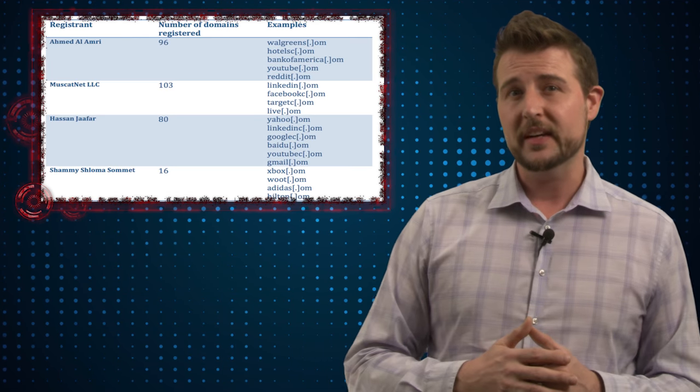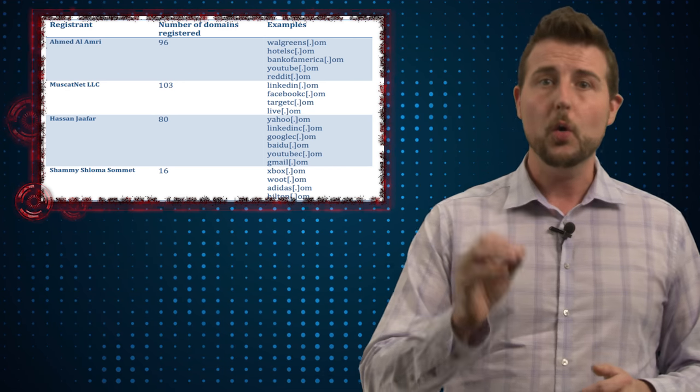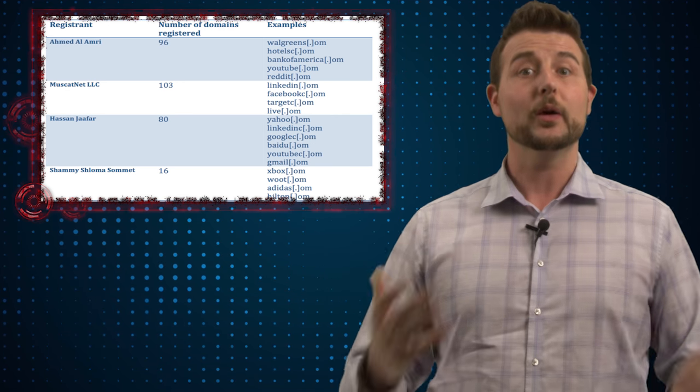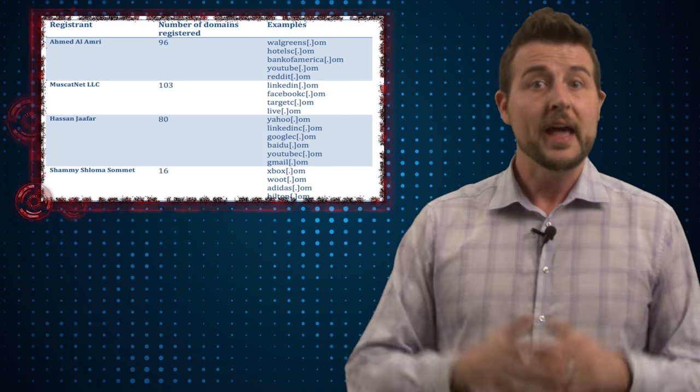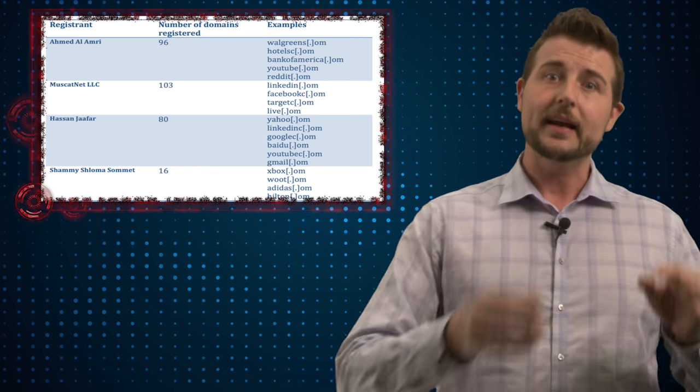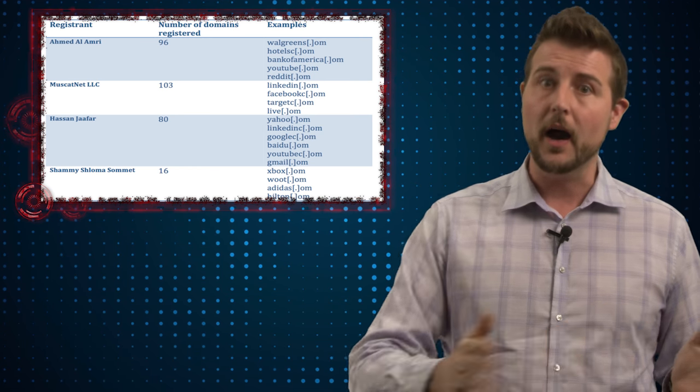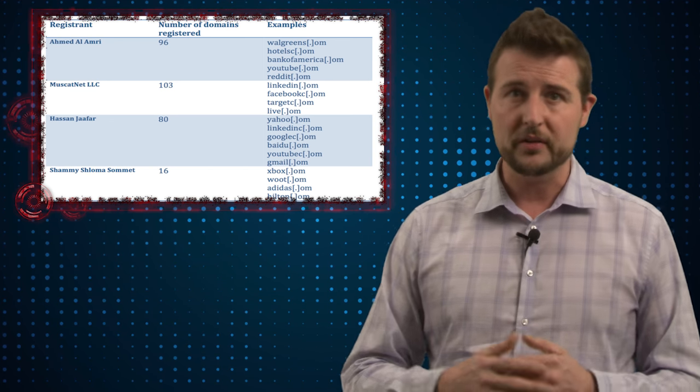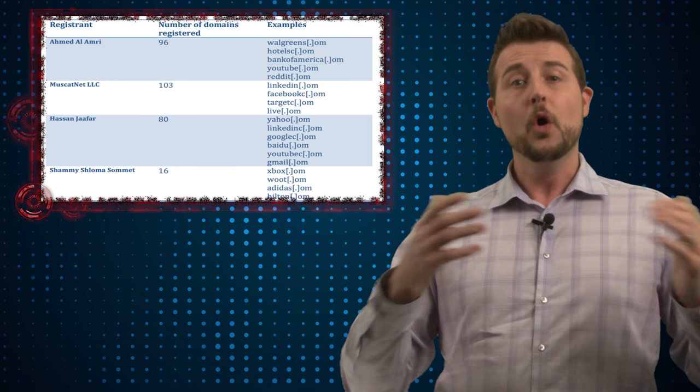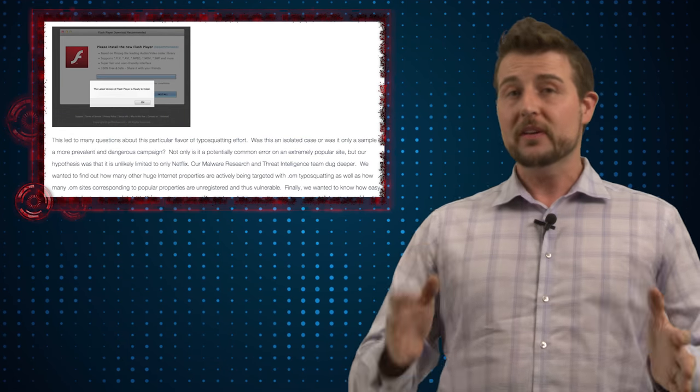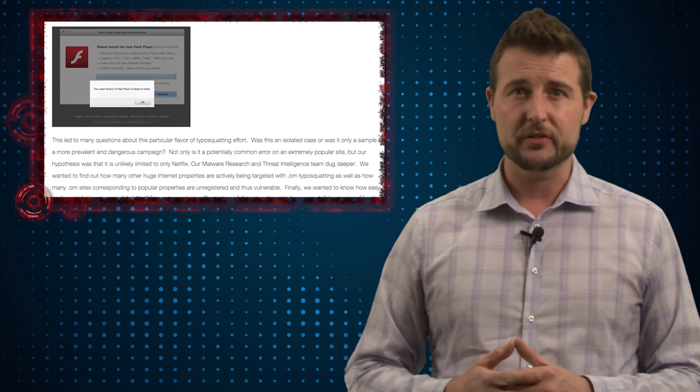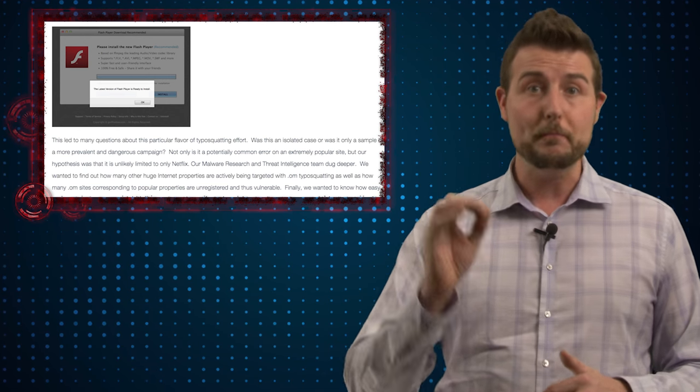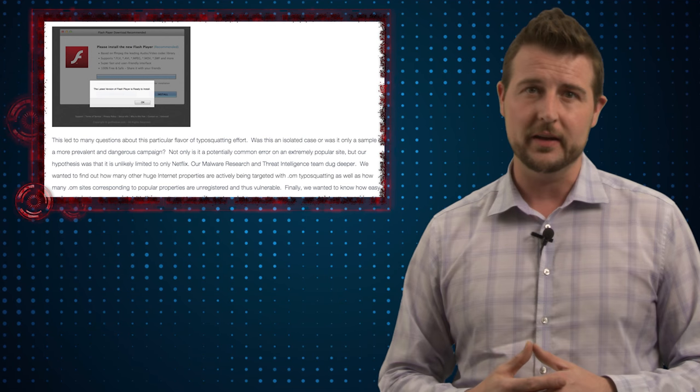Now, in this specific case, the bad guys were actually using the .om or OM domain. This is actually the top-level country code domain for a real country called Oman. Basically, if you type something like Netflix.om, mistyping the com, you might have been enticed to one of these malicious sites which would then try to leverage flaws to install malware on your computer or to socially engineer you. One of the particularly interesting aspects of this Endgame research was that it was actually a fake Flash installer that actually installed Mac malware that affects OS X computers.